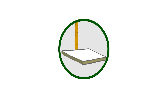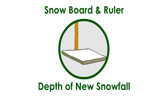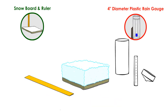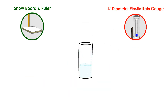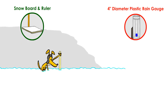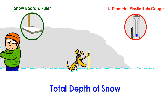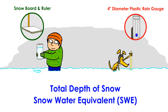The snowboard and ruler are used to measure the depth of new snowfall, which is also a part of daily precipitation. When combined with the 4-inch diameter plastic rain gauge, you can also take a core sample of the new snow on the board to confirm the water content of new snowfall, which is called snow water equivalent. Additionally, the ruler can also be used to measure the total depth of snow, and a separate core sample can be done to measure the snow water equivalent of the total amount of snowpack currently on the ground.